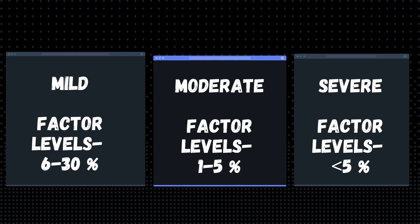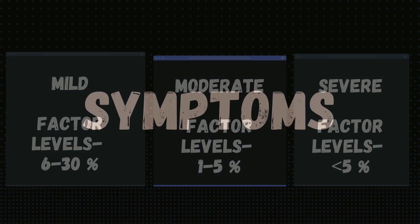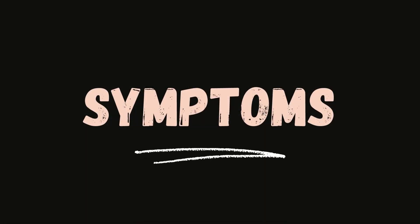Based on the levels of clotting factors, hemophilia is classified into mild, moderate, and severe disease. Mild hemophilia is characterized by factor levels in the range of 6 to 30%. Moderate hemophilia has factor levels in the range of 1 to 5%, while in severe hemophilia levels of less than 1% are present.